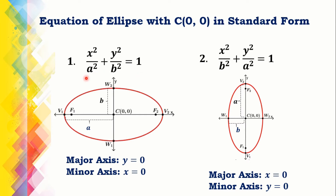If A squared is the denominator of x squared, then the major axis is on the x-axis. The major axis is a horizontal line with equation y equals 0, and the minor axis is a vertical line with equation x equals 0.